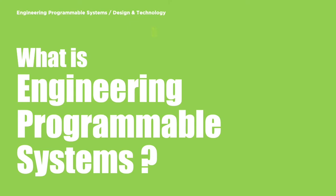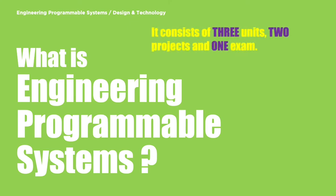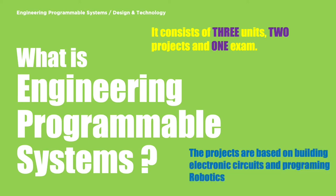Engineering Programmable Systems consists of three units, each developing your skills and knowledge that share a common core that you build upon and improve as you work through this course. Two of the units are practical based coursework giving you a greater control of your grade. The third unit is a written exam but subject knowledge is learnt through practical and theoretical lessons.